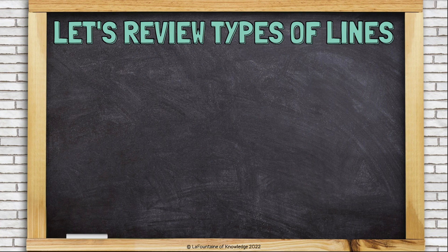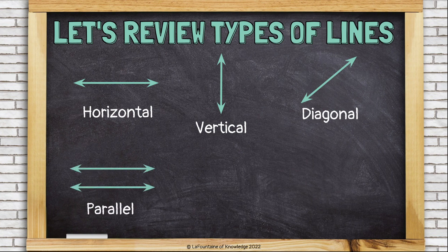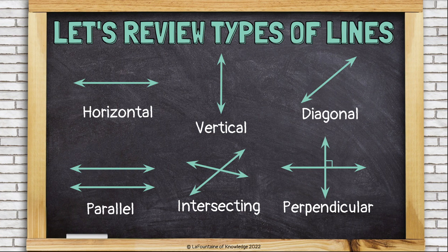Let's review types of lines. We have horizontal, vertical, and diagonal to describe the directions lines are going. And we have parallel lines, intersecting lines, and perpendicular lines to describe a line's relationship with another line. Parallel lines never cross. Intersecting lines cross. And perpendicular lines cross to form right angles.